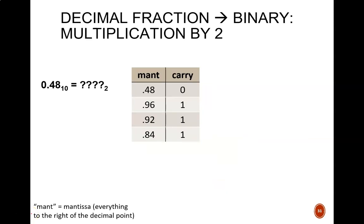How do we deal with fractions? We apply the repeated multiply by 2 method. In many ways, this approach is the opposite of what we just saw in the divide by 2 method. First, I draw a two-column table. I label the left column mant. This is short for mantissa, which is the word for everything to the right of the radix point. I label the right column carry. This will hold the whole number portion, or, in other words, the value to the left of the radix point.